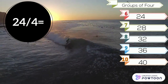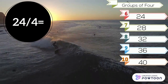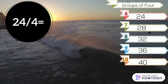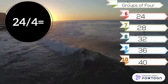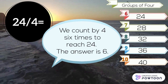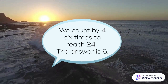24 divided by 4. Look at the groups of 4. 6 groups is 24, 7 is 28, 8 groups is 32, 9 is 36, 10 is 40. We count by 4 six times to reach 24. The answer is 6.